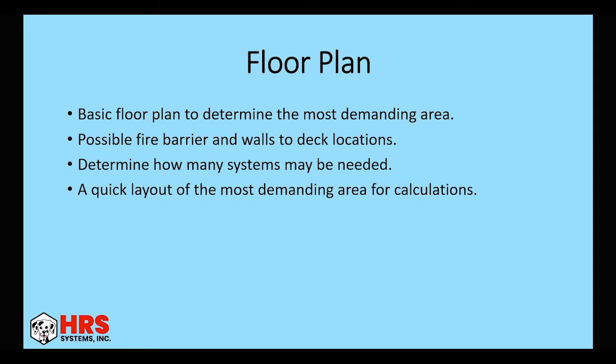So then you want a basic floor plan. A lot of times at this point in the project, I literally just have an outline of a building. So you might not have a floor plan, but it would be nice to have. Most architects when they're bringing in fire protection at this point, they've already basically laid out the occupancies. So you'll have that information to work with and you can determine the hazards and occupancies at that point and determine where your most demanding area will be. Then you're also going to want to know where possible fire barriers are or walls to deck to help with determining which area will be most demanding. How many systems you might need. This could change how your calculations are and where you run your piping. And then a quick layout of the most demanding area for calculations. So it would be best to do a quick layout, but I'm going to show you ways to get around actually laying out any sprinklers on the design or on the floor plan. So that you can just quickly go through and get an estimation in a few minutes.